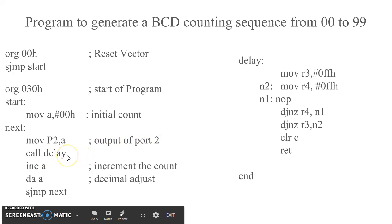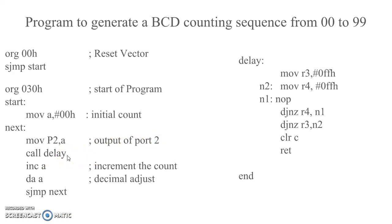The delay should be sufficient so that the count stays for a while and is visible to the user. The delay routine here is using two counts for this reason.